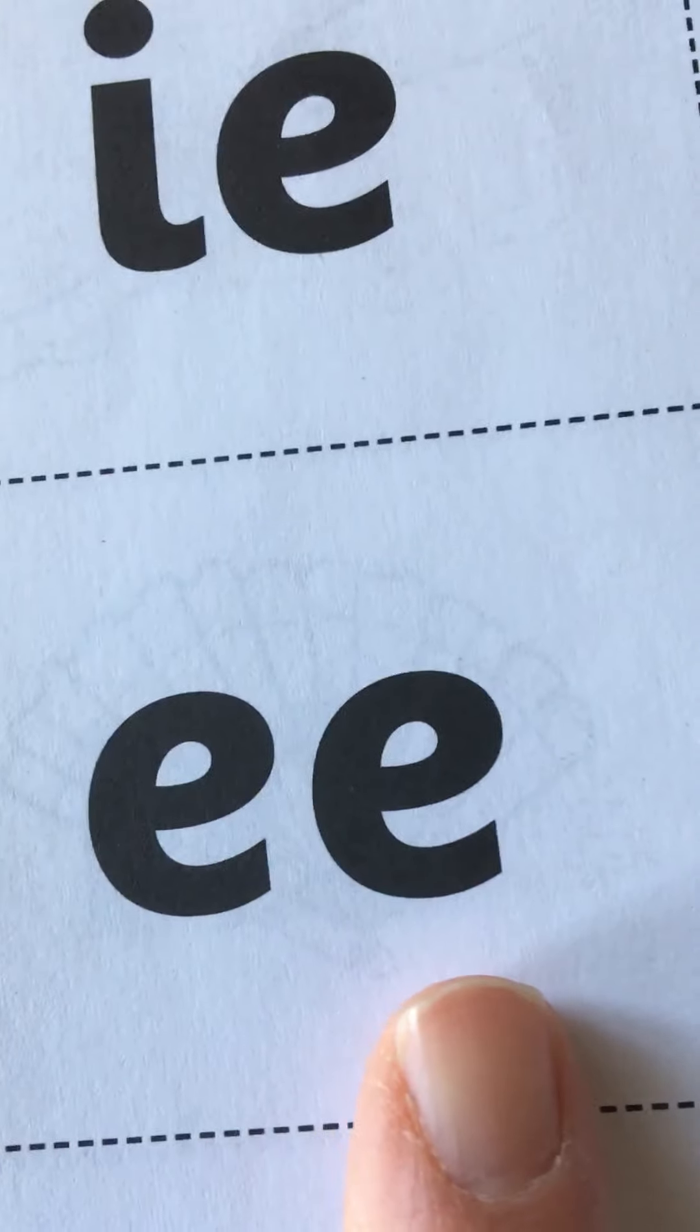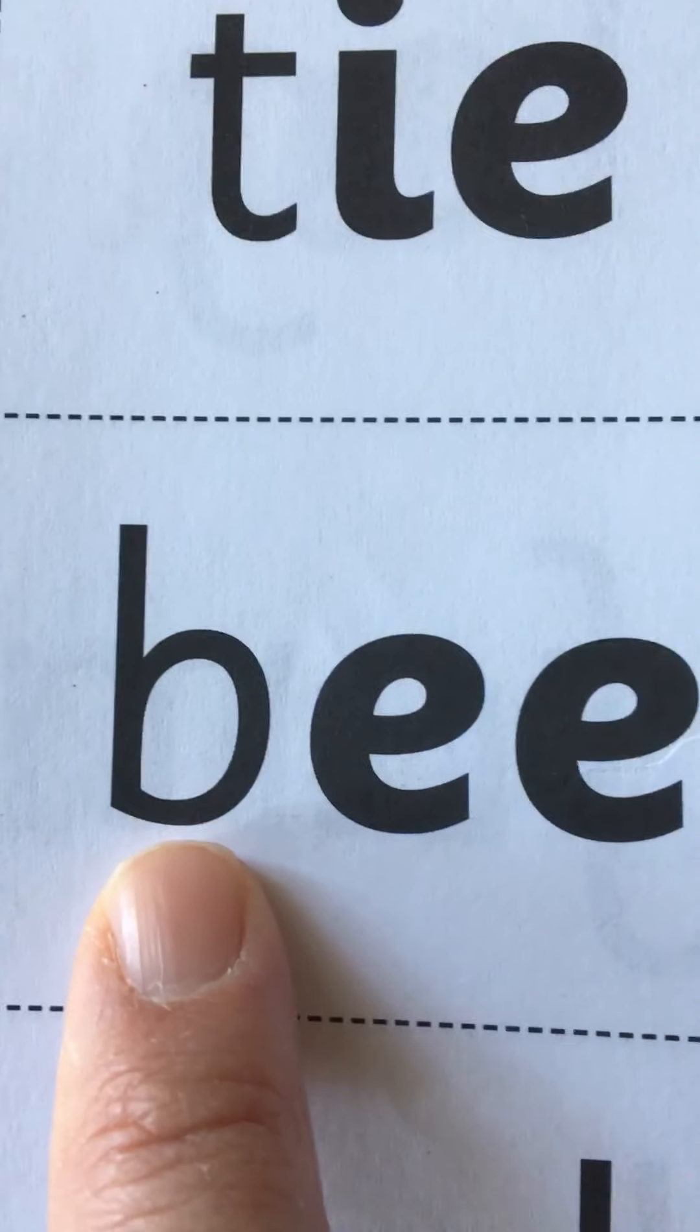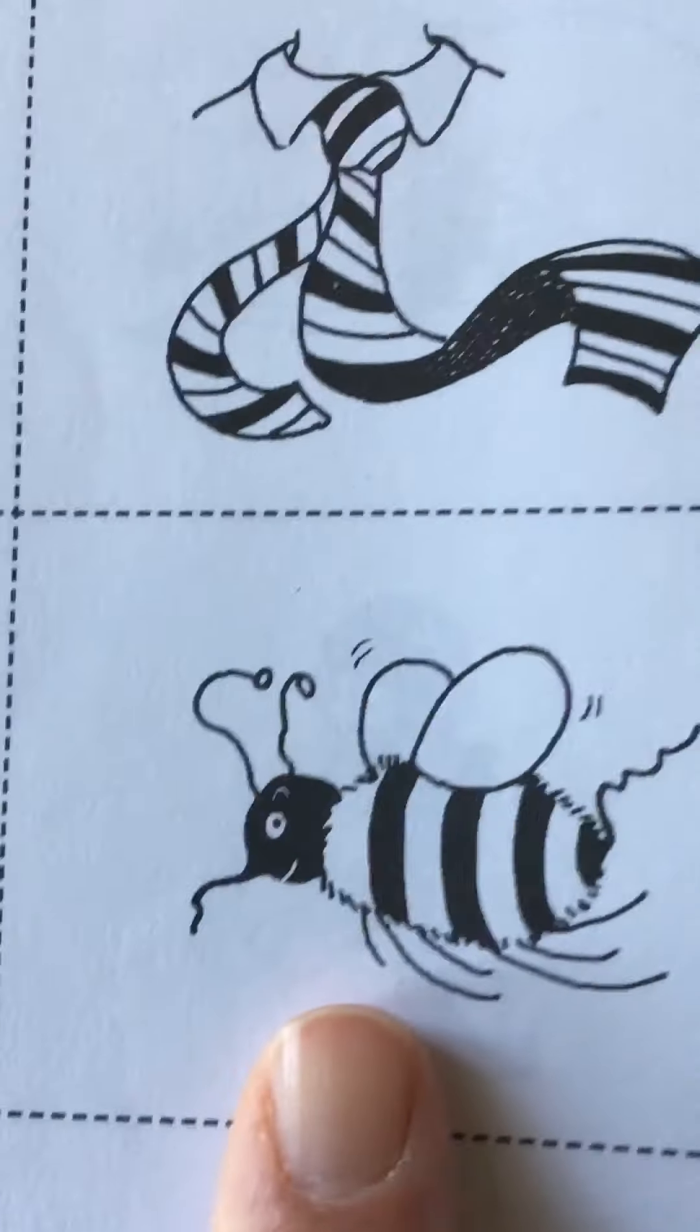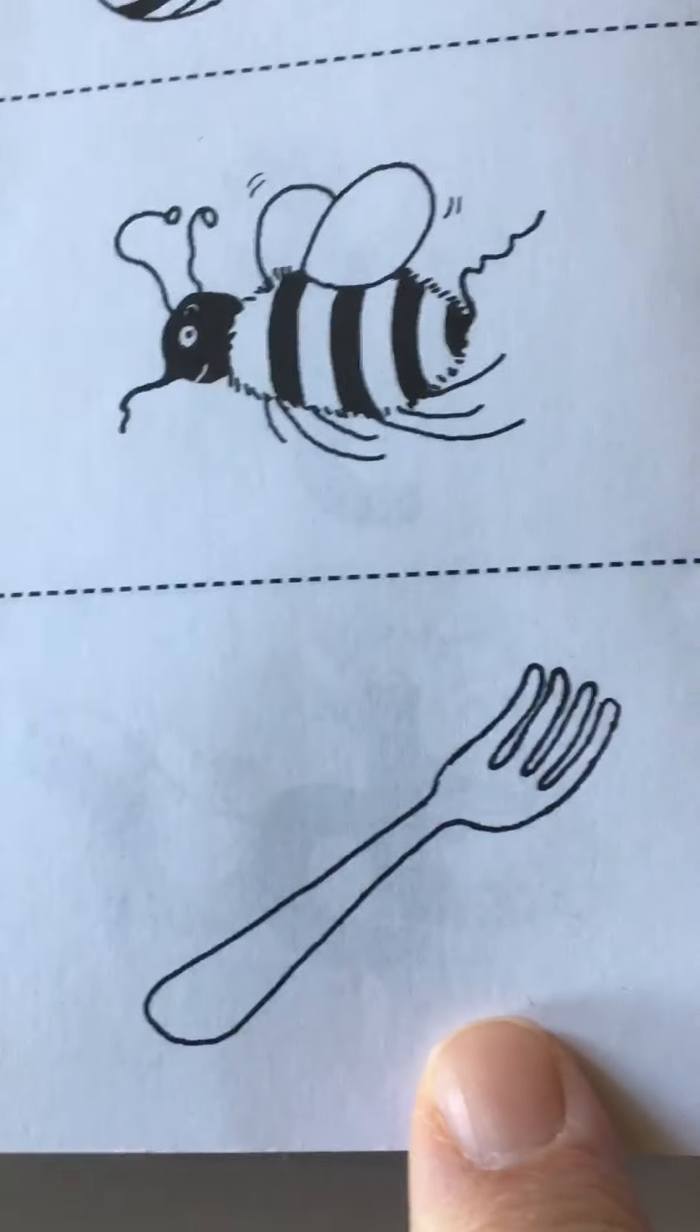EE, EE, remember EE. We're going to do EE, bee, bee, a little bee. OR, OR, OR as in fork, fork. We have a fork.